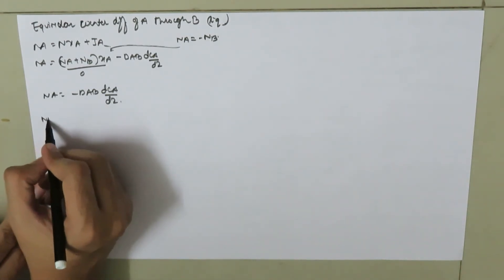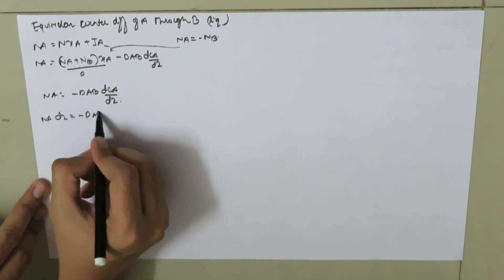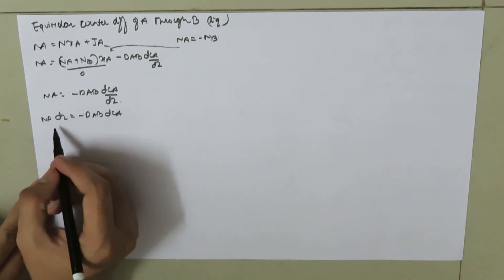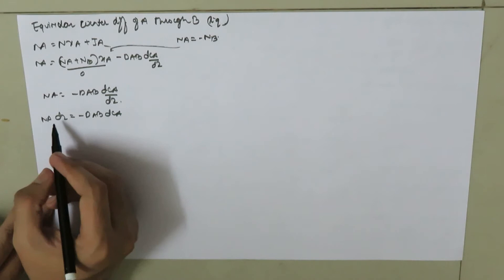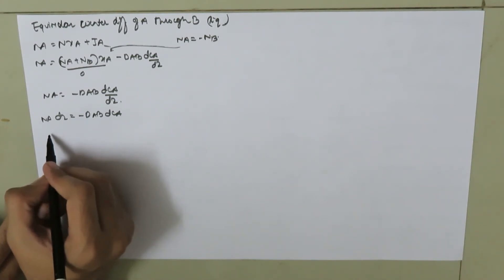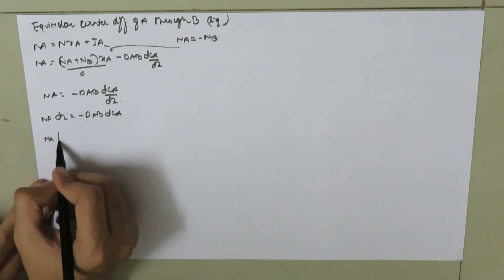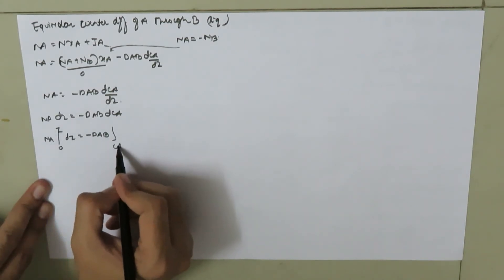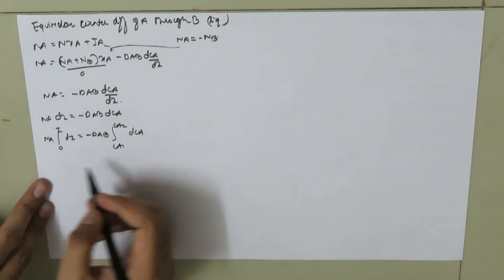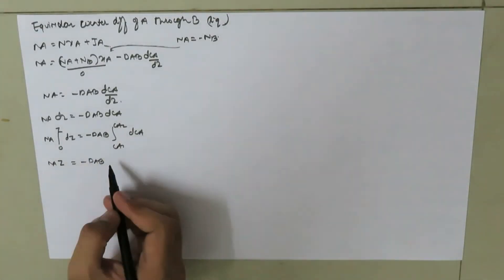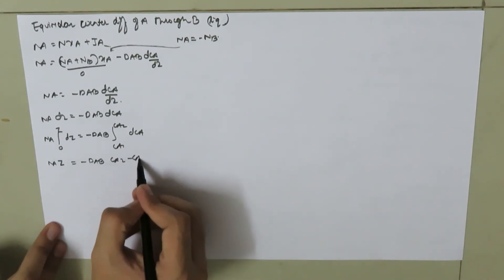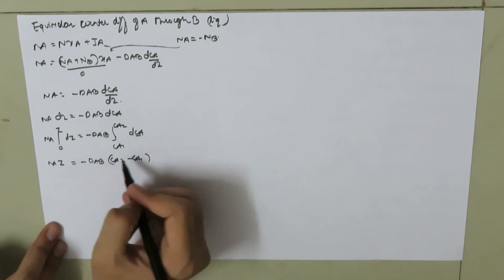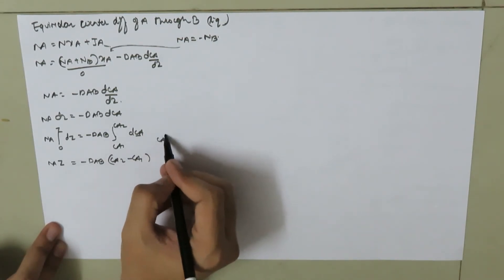This simplifies to Na = −DAB·(dCA/dZ). Rewriting: Na·dZ = −DAB·dCA. Integrating from 0 to Z on the left and CA1 to CA2 on the right: Na·Z = −DAB·(CA2 − CA1) = DAB·(CA1 − CA2).